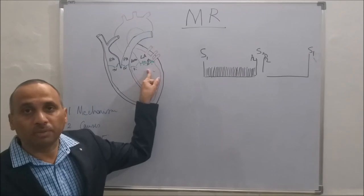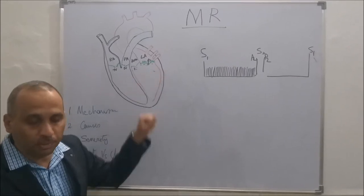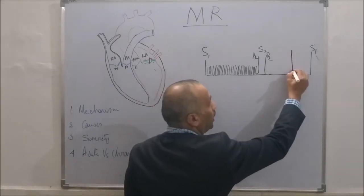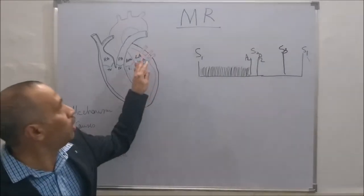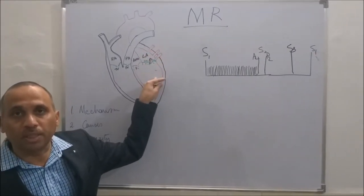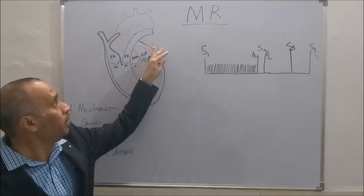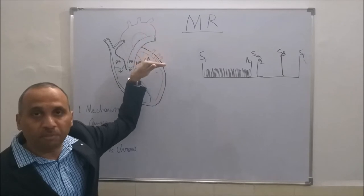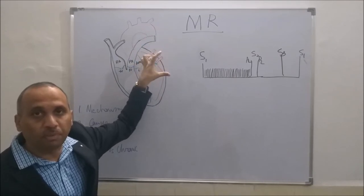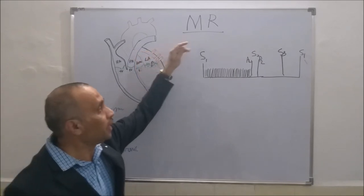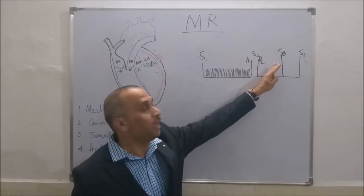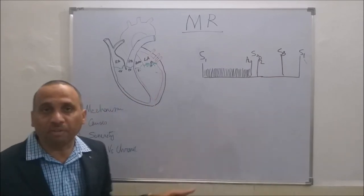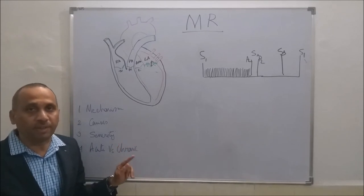In severe mitral regurgitation, there may be an additional sound — the S3. Because of the large volume of blood in the left atrium: during systole, blood from the left ventricle comes to the left atrium, and during diastole the LA is relaxing and also receiving blood from the pulmonary veins. So a larger volume of blood accumulates in the left atrium. When the mitral valve opens, the entire blood rushes in causing a third heart sound. So S3 in the setting of mitral regurgitation indicates severity.